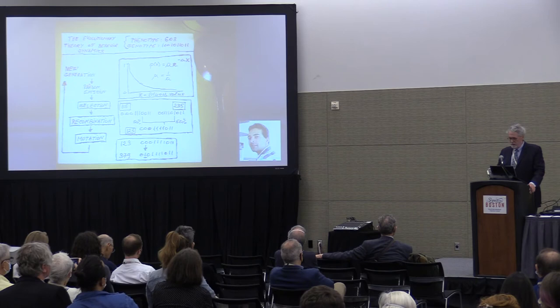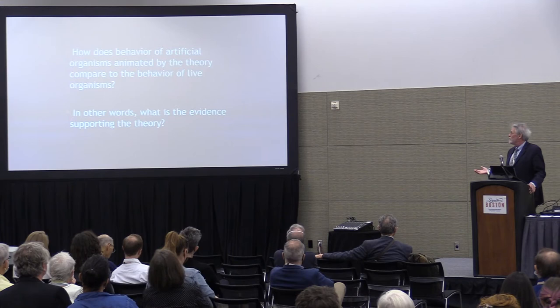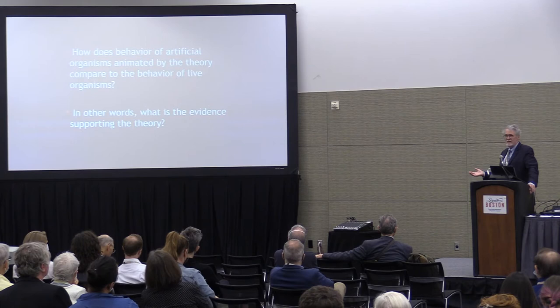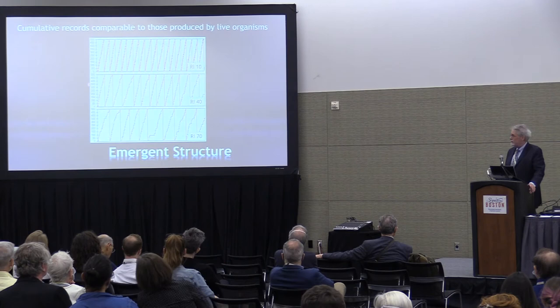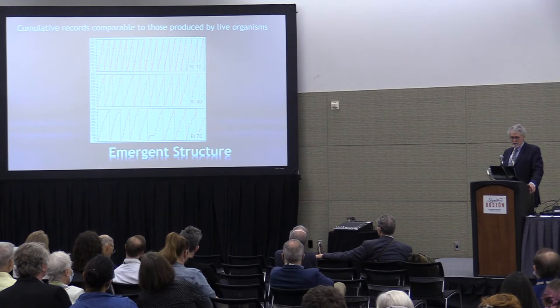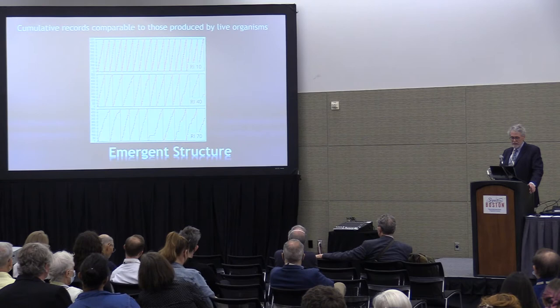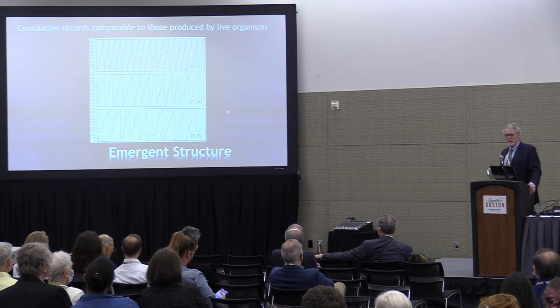It tells an appealing story: behavior evolves in ontogenetic time in response to consequences from the environment. The question is, does it work? Does it describe behavior accurately? How does the behavior of artificial organisms animated by this theory compare to the behavior of live organisms? Let's look at cumulative records — three RI schedules: RI 10, RI 40, and RI 70, showing a single artificial organism on each. We get a nice steady response rate as we do with live organisms. The slope is steeper for RI 10 than for RI 70, which is also what we see in live organisms.